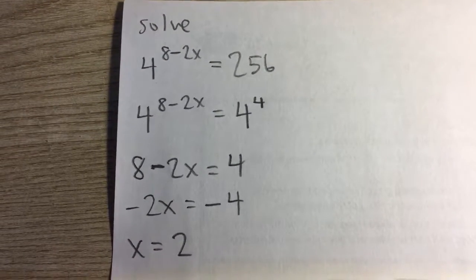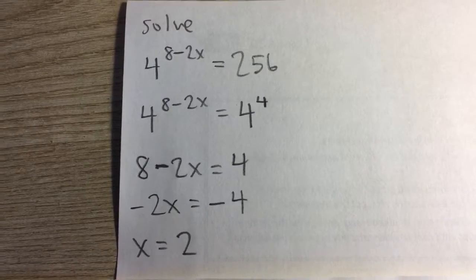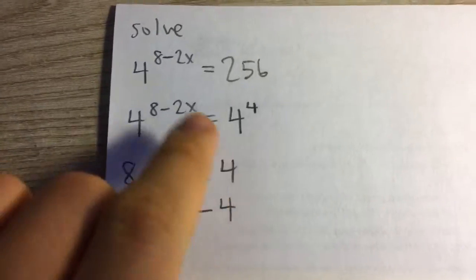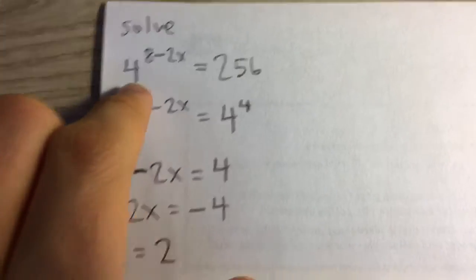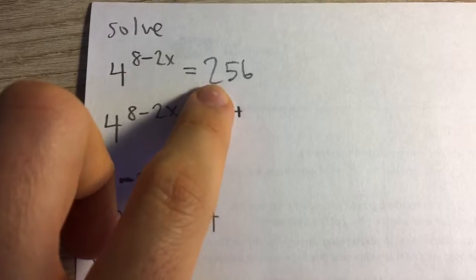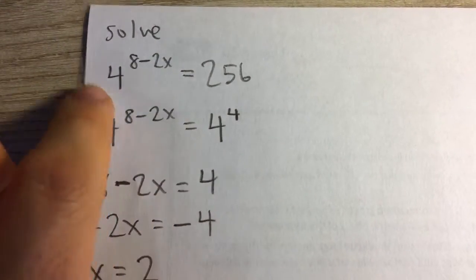Solve 4 to the 8 minus 2x power equals 256. To solve this exponential equation, we want to write both sides of the equation with the same base, so in this case base 4.